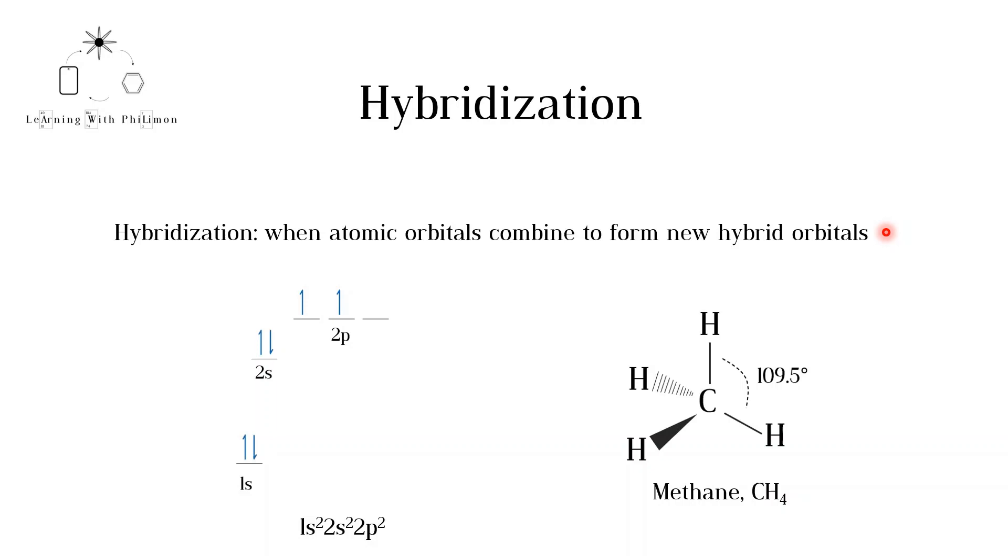For example, as we saw in the VSEPR video, methane has a tetrahedral structure. Carbon forms four equal single bonds to hydrogen atoms. The electron configuration of carbon is 1s2, 2s2, 2p2.